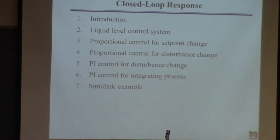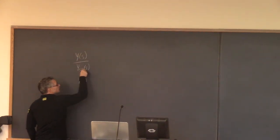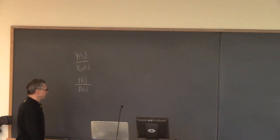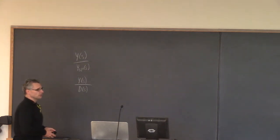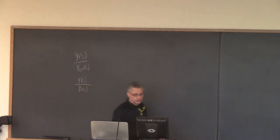We're proceeding along talking about introductory concepts associated with control. Last time we talked about closed-loop transfer functions — we found transfer functions for how the output responds to a change in the set point and how it responds to a change in the disturbance. These transfer functions are like open-loop transfer functions: once you have them, you can specify a particular change in the set point or disturbance and calculate what the response would be. That is called the closed-loop response.